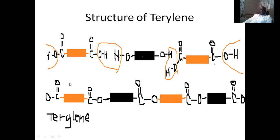You have to pay keen interest to see and understand this linkage because it is normally asked in exam questions — to identify which one is an ester linkage. The rectangles used in diagrams can be of different shapes and colorations; it doesn't matter. They simply show that there is an intermediate molecule hidden inside. What is shown at the ends are the carboxylic group and the hydroxyl group.